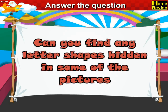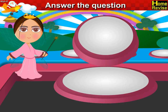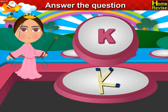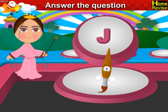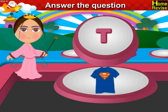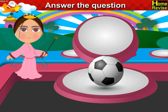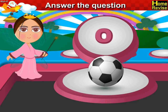Can you find any letter shapes hidden in some of the pictures? Yes, we can find some letters hidden in these pictures. Here is the letter K. Here is the letter S. This is letter J. This is letter T. This is letter O. This is letter X. Thank you.